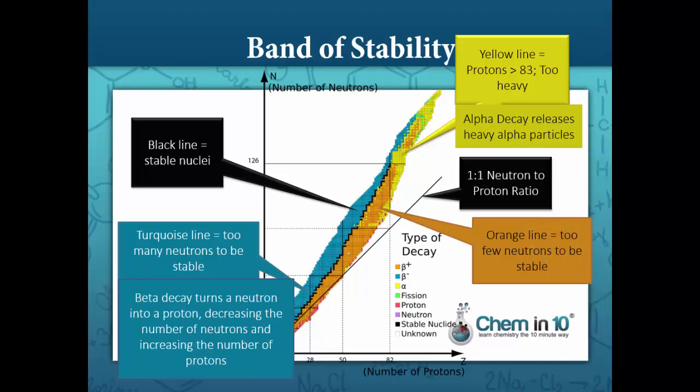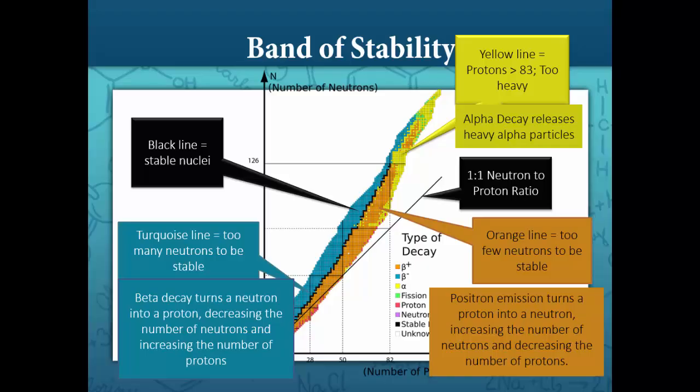If an isotope falls on the orange line, which is below the black line of stable nuclei, it clearly has too few neutrons to be stable. In order to increase the neutron-to-proton ratio, a proton becomes a neutron through positron emission, in which a proton becomes a neutron and a positron, which is a positive version of a beta particle.